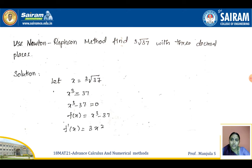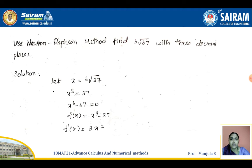First example: Use the Newton-Raphson method to find the cubic root of 37 correct to three decimal places. Instead of giving an equation directly, they have written it in terms of a number. We have to find the root of the cubic equation for 37 using Newton-Raphson method. The answer must be correct to three decimal places, meaning after the decimal point, three digits must have the same repeating value.